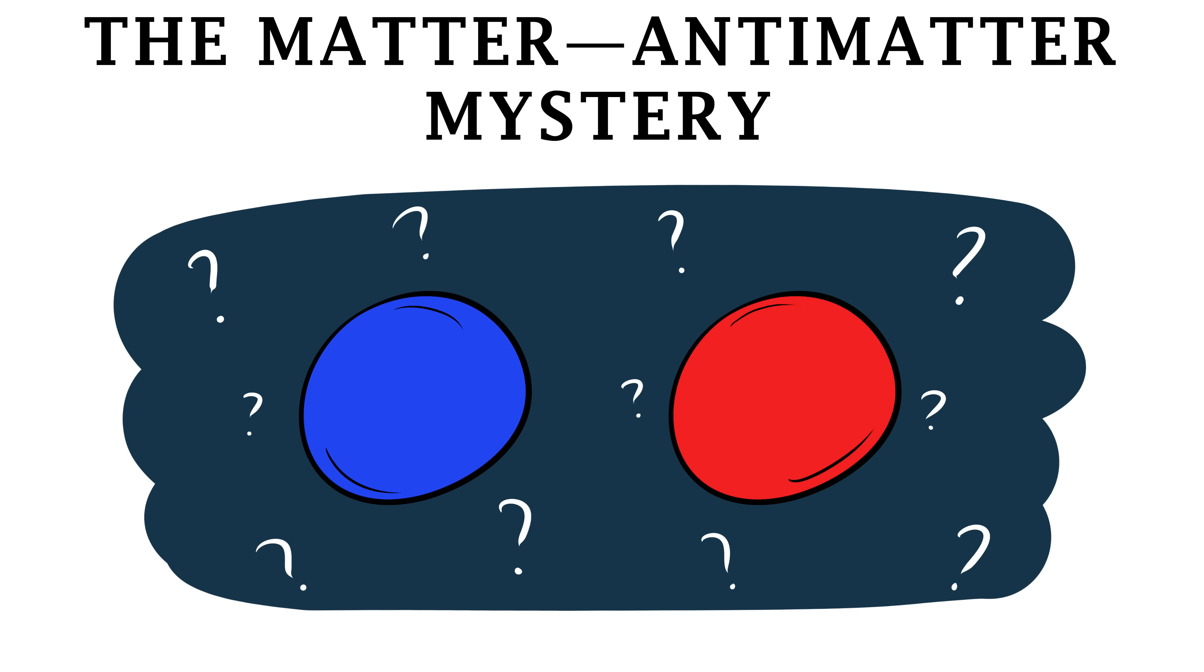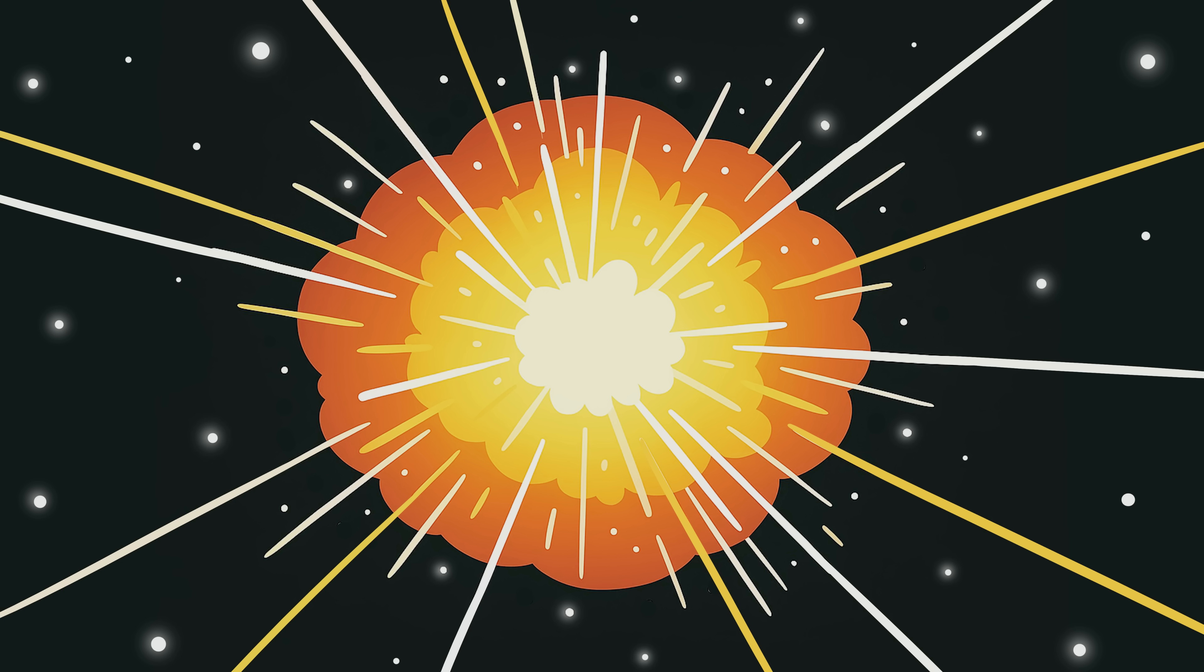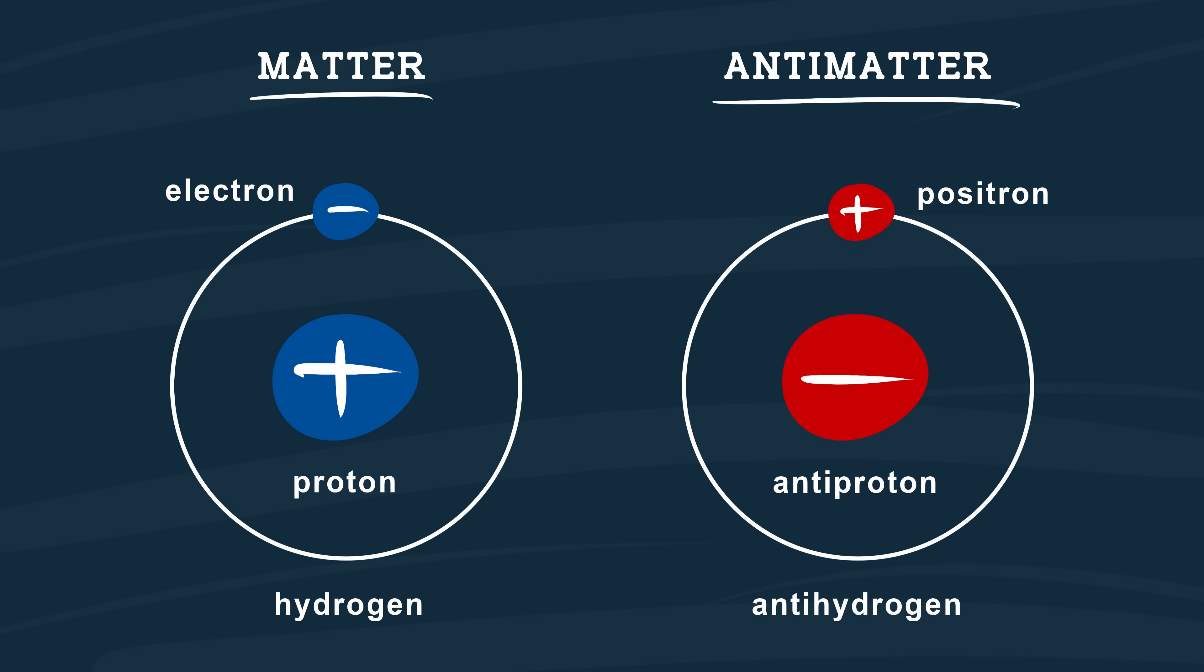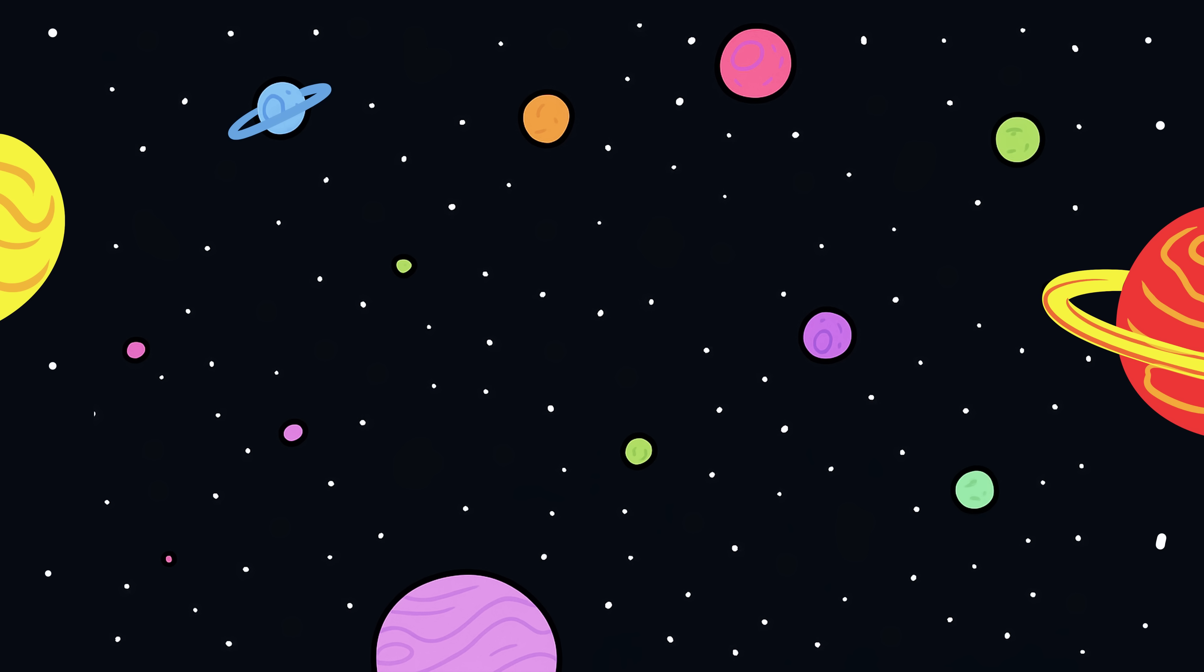Number seven, the matter-antimatter mystery. When the Big Bang happened, physics says it should have produced equal amounts of matter and antimatter, mirror versions of each other that annihilate when they meet. But look around. The universe is made almost entirely of matter. Antimatter is basically extinct. Somewhere, something broke the perfect balance.